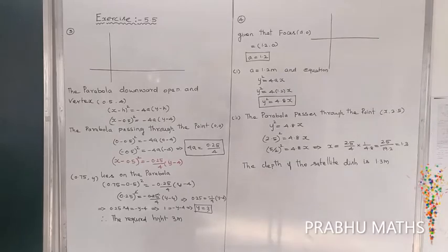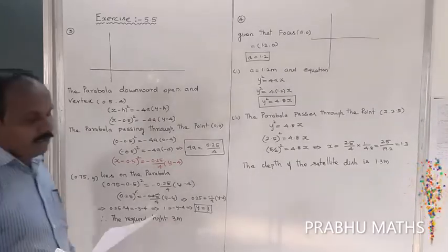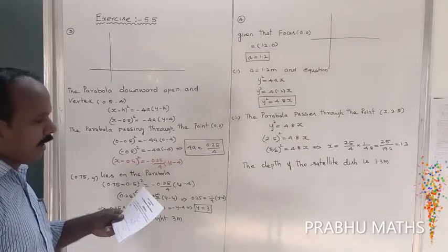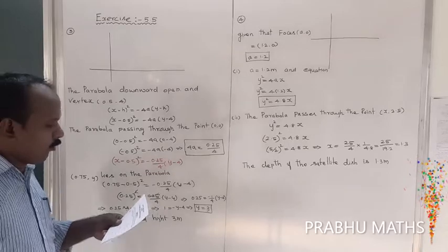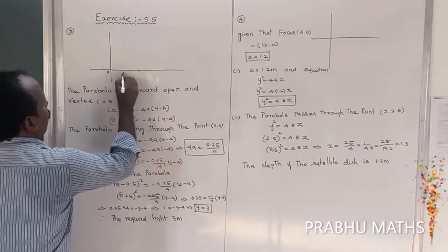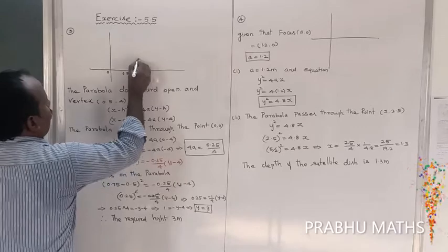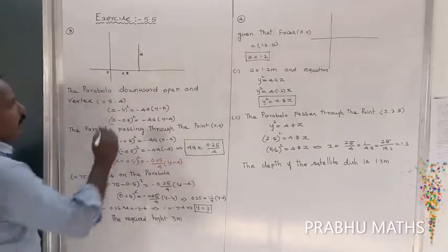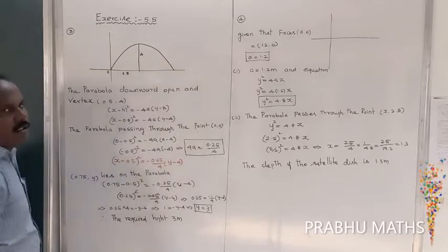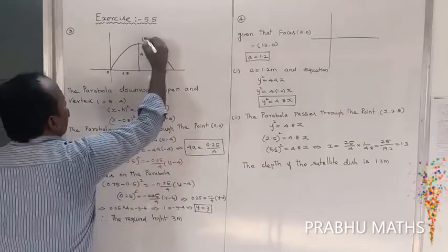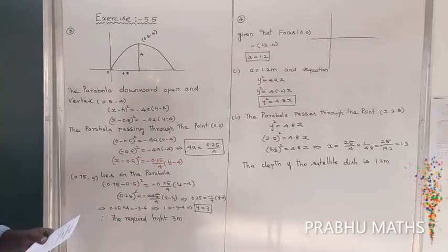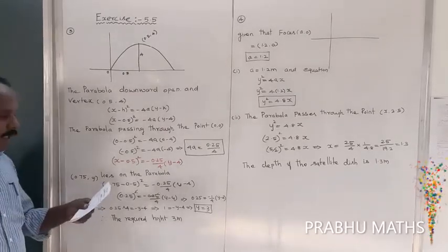Exercise 5.4, third sum: at a water fountain, water attains a maximum height of 4 meters at a horizontal distance of 0.5 meters from the origin. So the vertex point is (0.5, 4). The path of the water is a parabola.